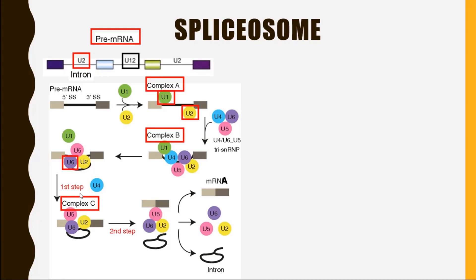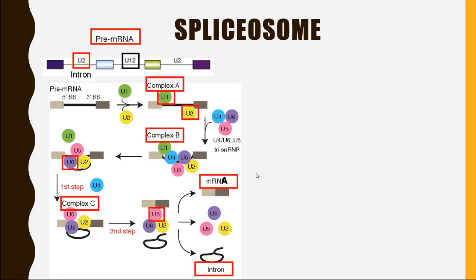In Complex C, U6 and U2 cut the introns from the pre-mRNA, and U5 joins the exons together to produce the mature messenger RNA with the introns removed.